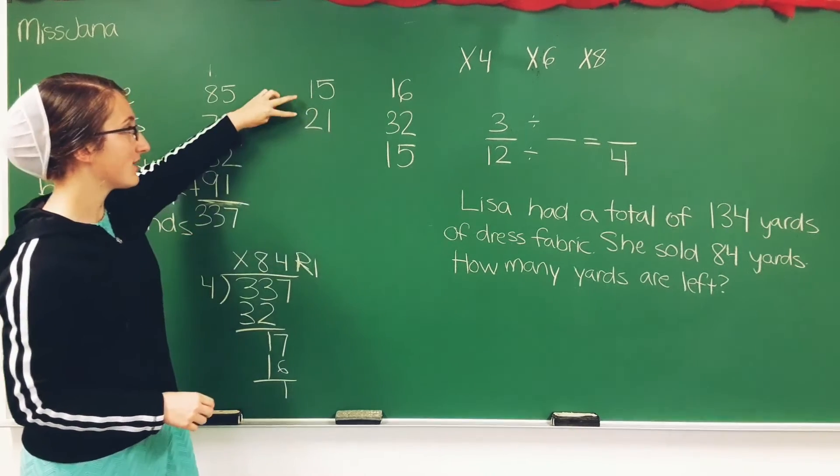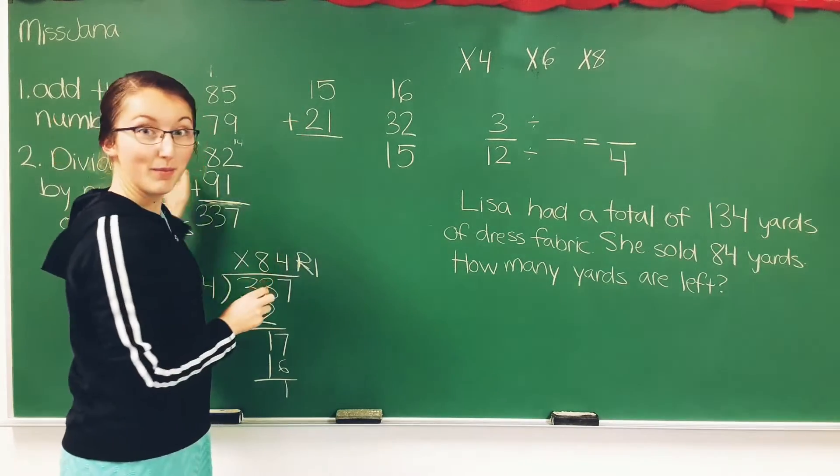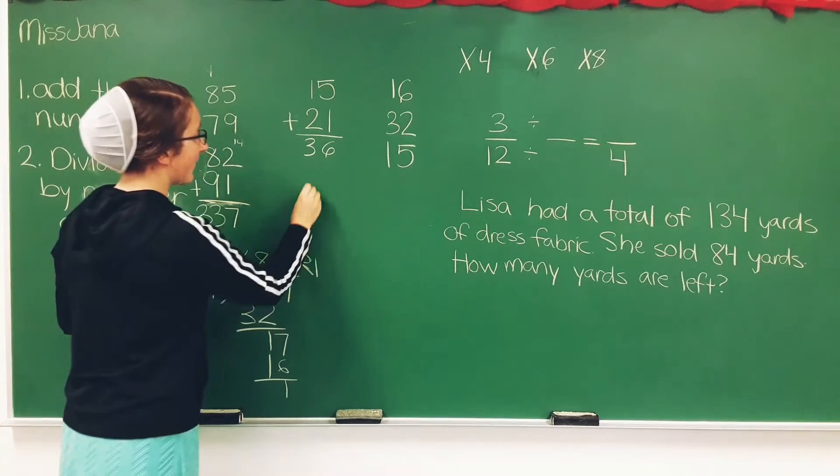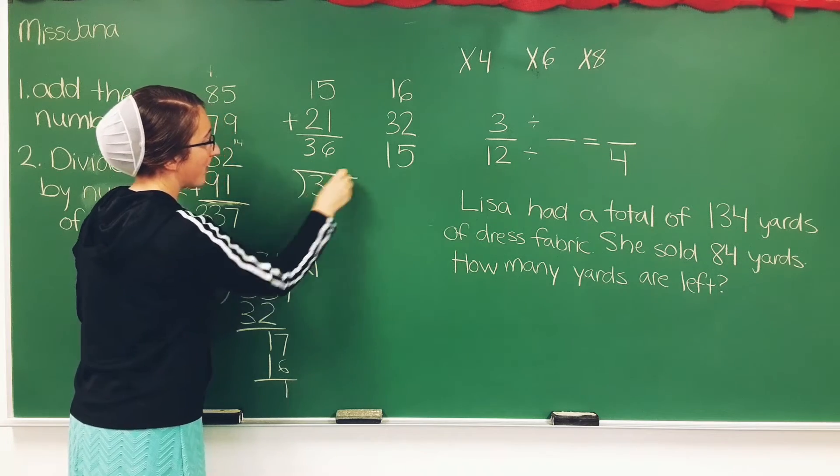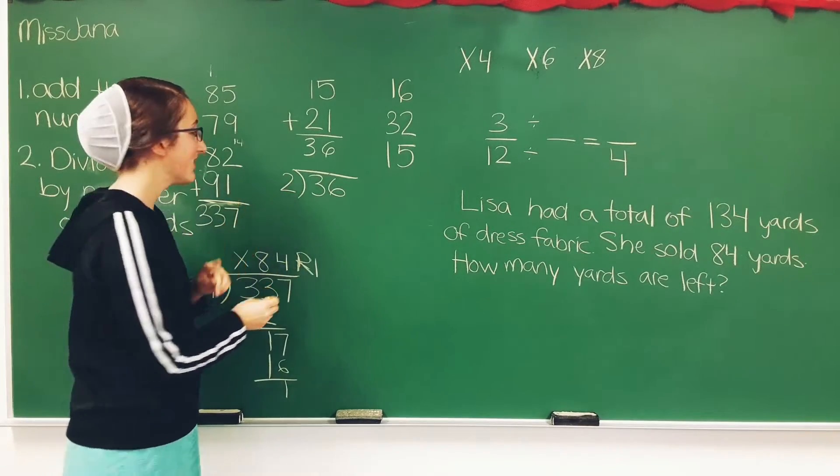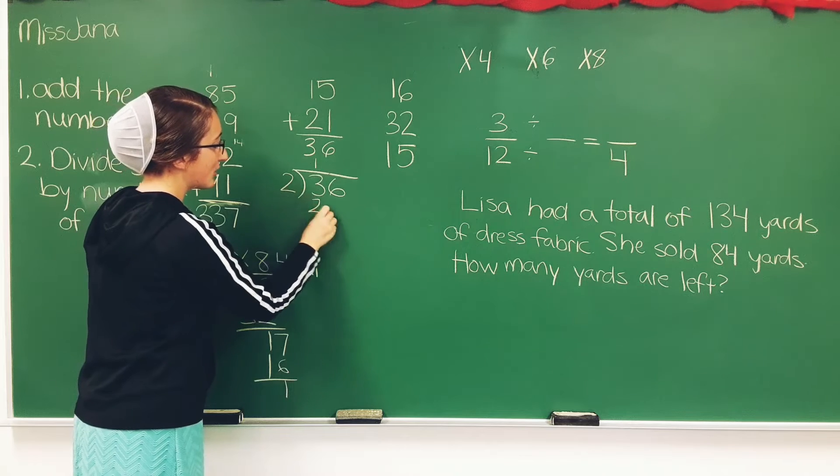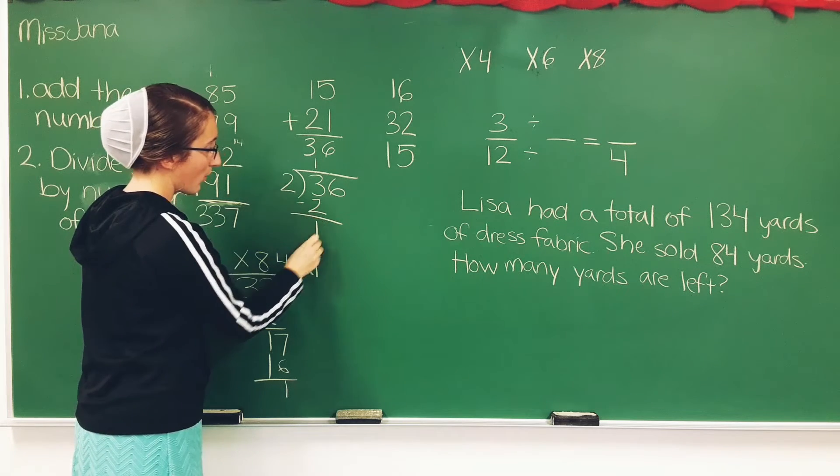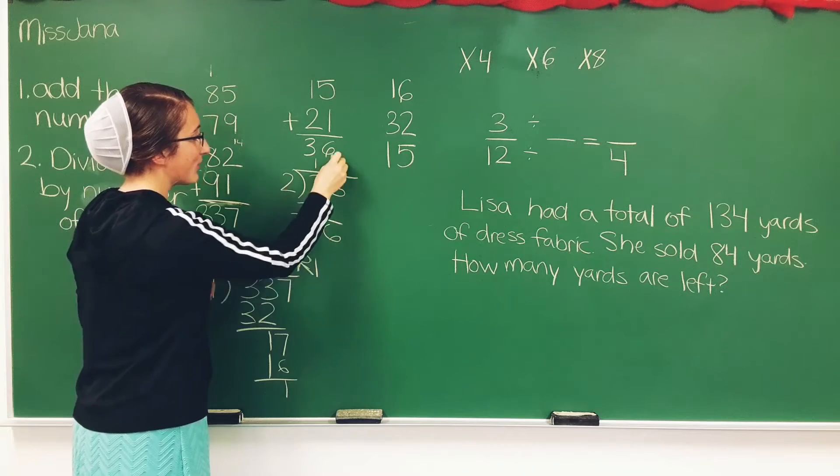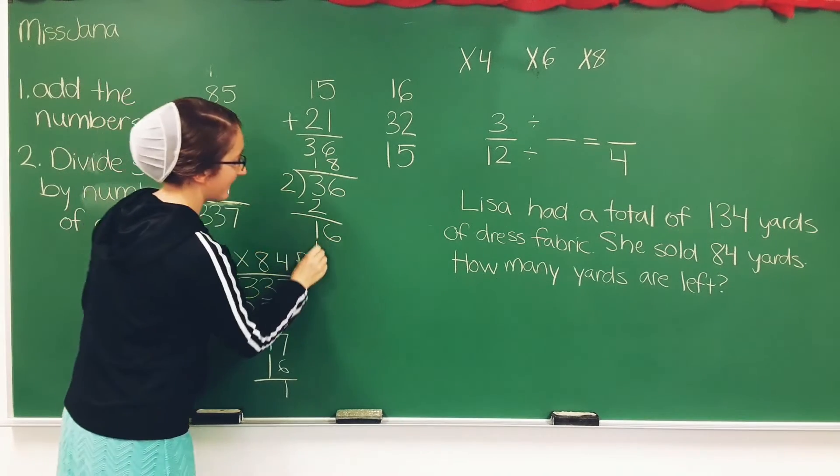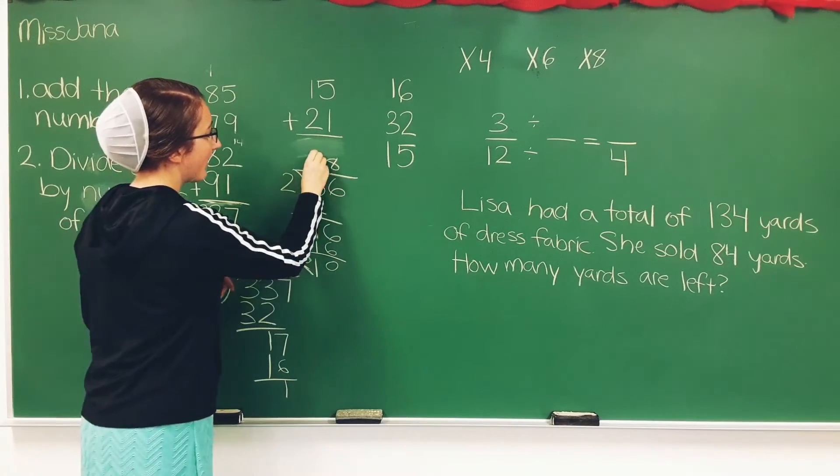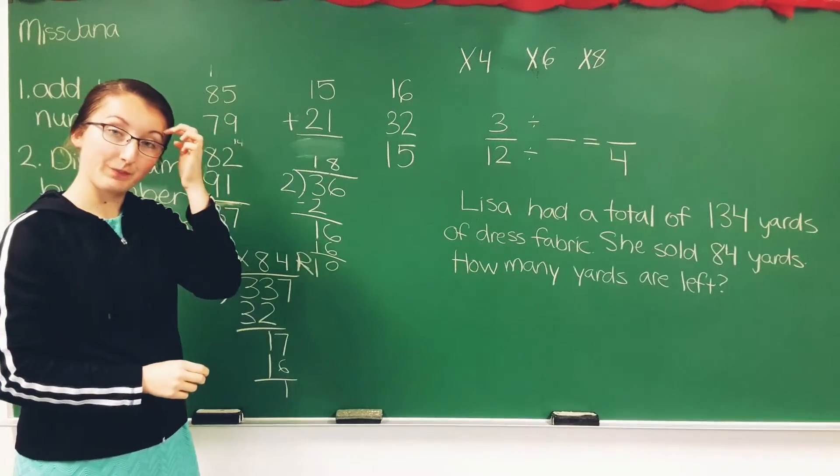Let's add in this one. This one only has 2 addends. First step, add the numbers. 5 plus 1 is 6. 1 plus 2 is 3. So we take our sum, 36, and divide it by the number of addends, and we have 2 addends. 3 divided by 2, break it down to our heads, and 1. 1 times 2 is 2. 3 minus 2 is 1. 16 divided by 2 is 8. 8 times 2 is 16. So 18 is the average of 15 and 21.